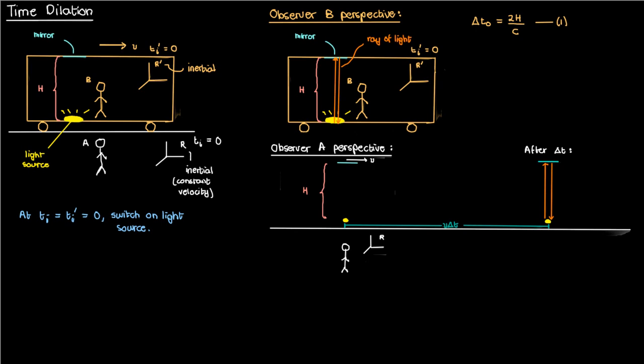After a certain time interval delta_t, the ray of light will have reflected back to the source. However, both the source and the mirror would have moved a distance of v*delta_t forward. At delta_t/2 the ray of light will be in the middle of its path, reflecting off the mirror. The horizontal distance between when the light leaves the source and when it hits the mirror is v*delta_t/2, and the same applies on the return path.